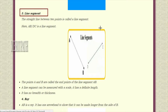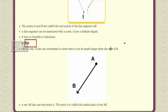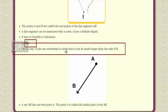A line segment is a straight line between two points. As discussed earlier, when we take two points and join them with a scale, we call it a line segment. A line segment has two endpoints, A and B. Points A and B are called the endpoints of the line segment, and we can measure its definite length using a ruler.